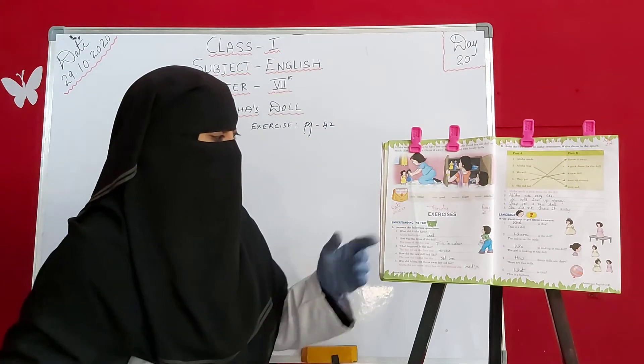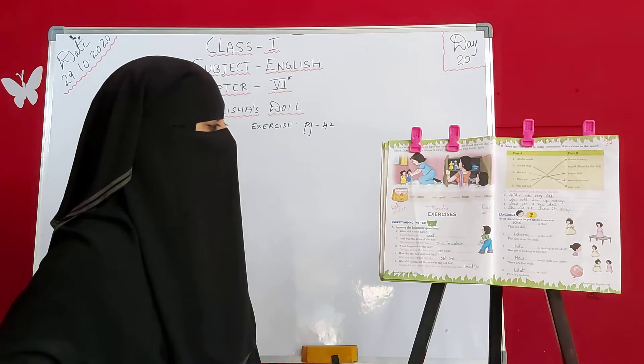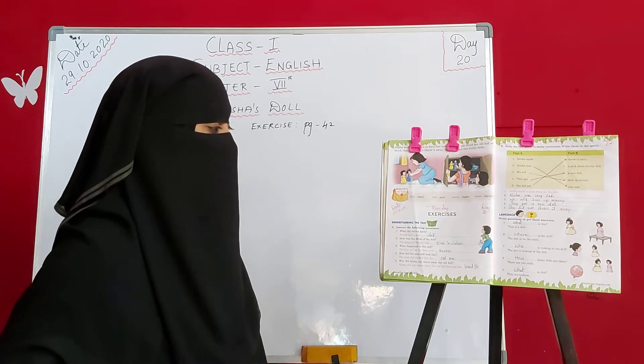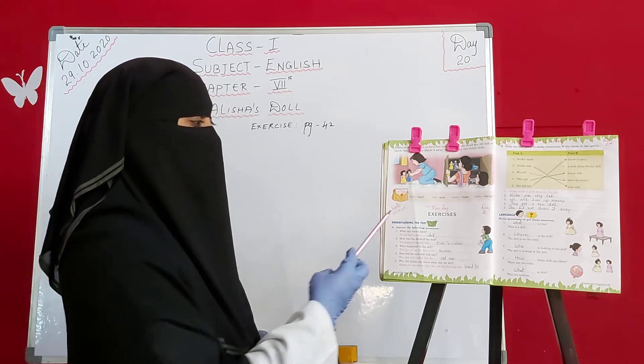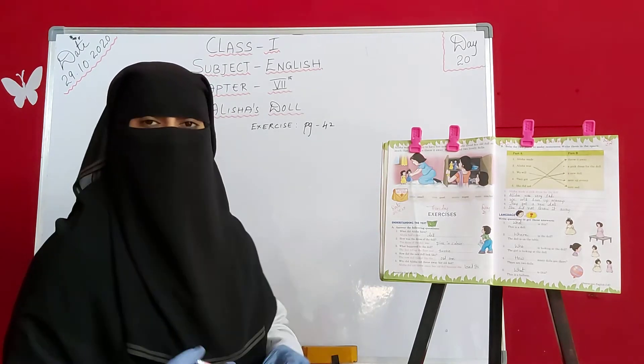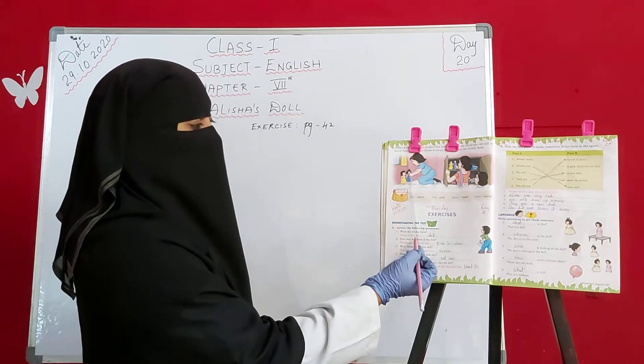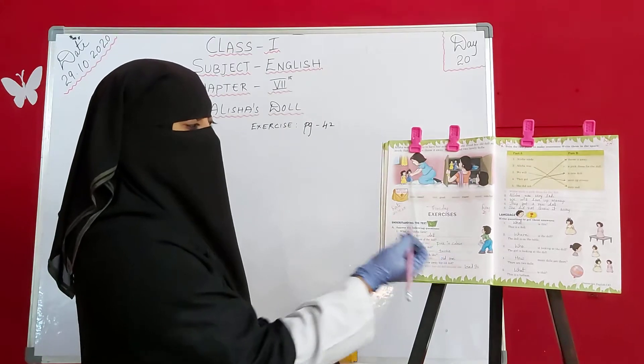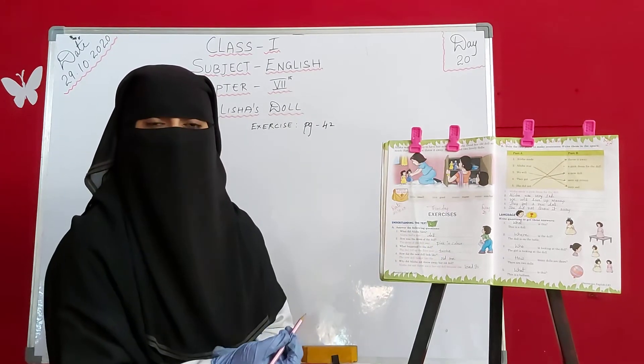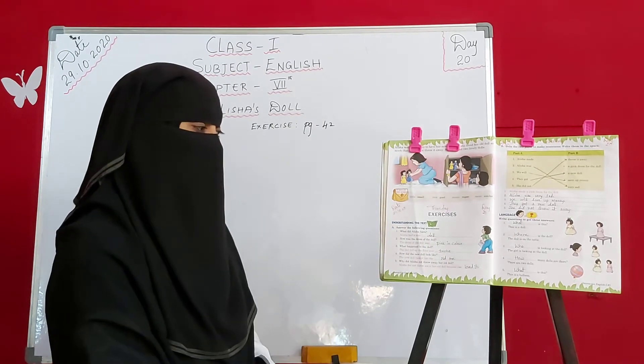So here the first question is: what did Alicia have? Alicia ke pas kya tha? Alicia had a nice doll. What she had? She had a nice doll.